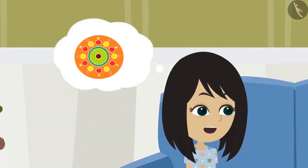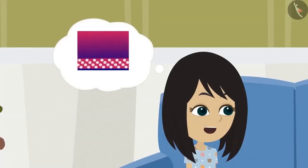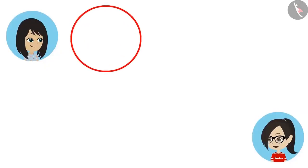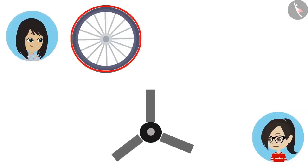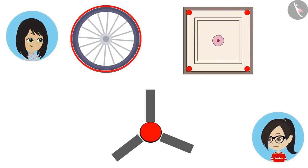Like in Rangoli, Mummy's saree, and the design on the gate, the circle is there to enhance their beauty. Whereas for the wheels of a bicycle, the center part of a fan, and the holes in the carom board, the circular shape is an essential part.